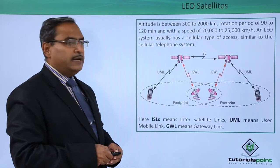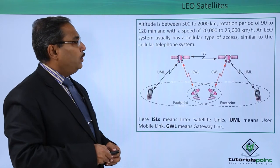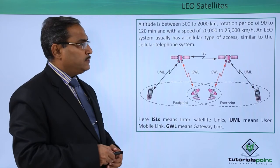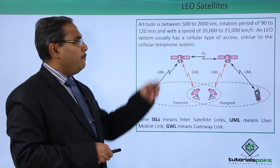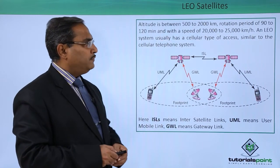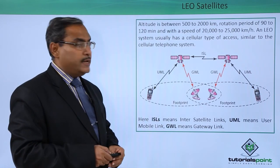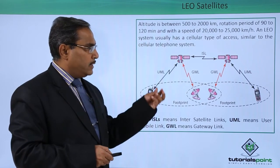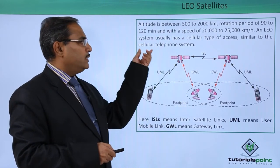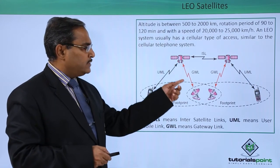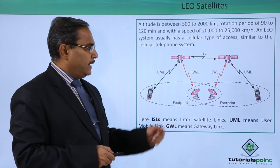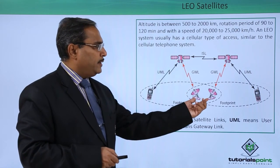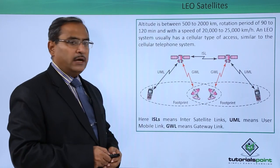The last category of satellite is our LEO satellites. The altitude is between 500 to 2,000 kilometers, with a rotation period of 90 to 120 minutes and a speed of 20,000 to 25,000 kilometers per hour. LEO systems usually have a cellular type of access similar to the cellular telephone system. These are the satellites and these are the footprints these satellites have, and under this we have ground stations for doing the communications.